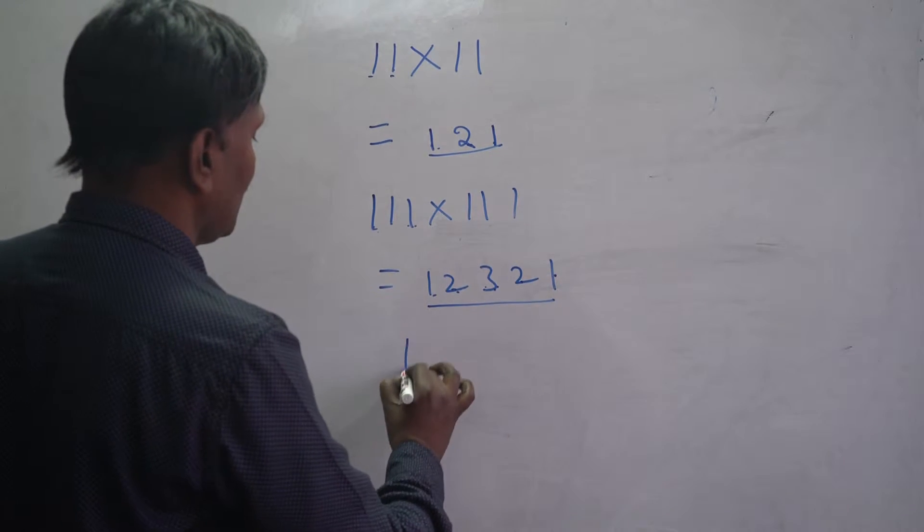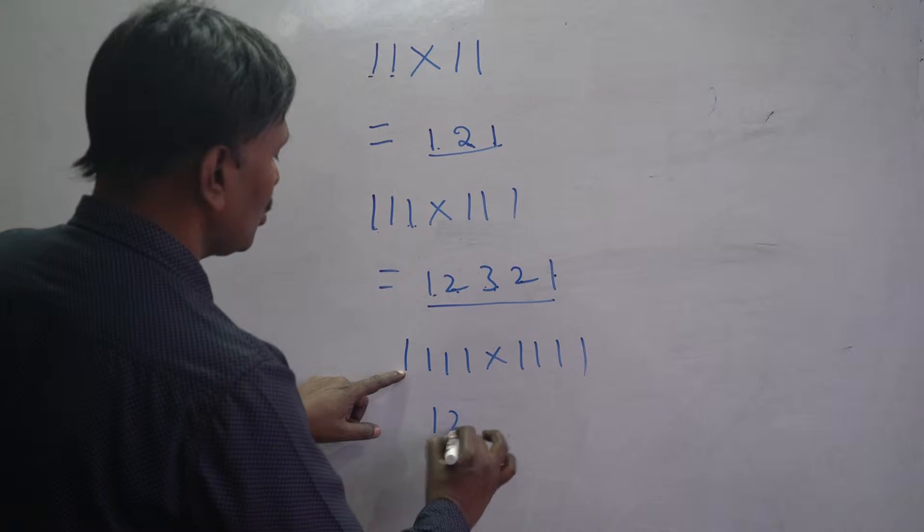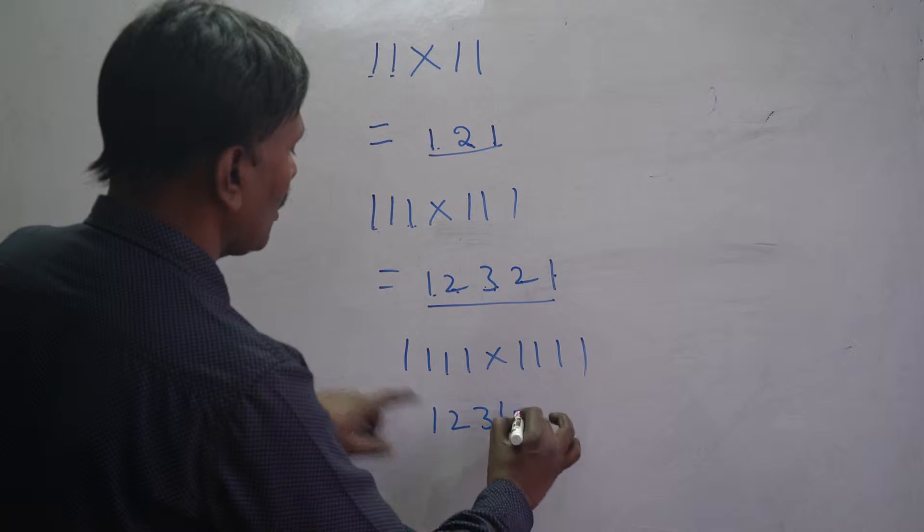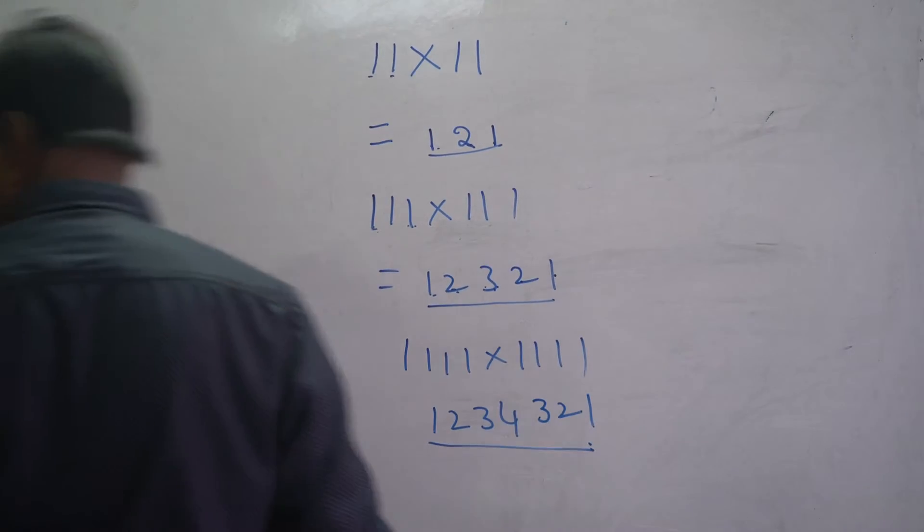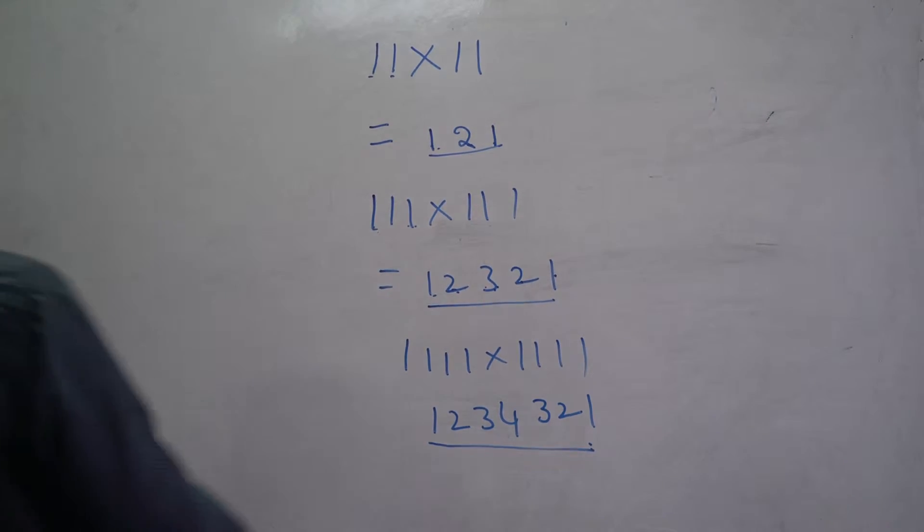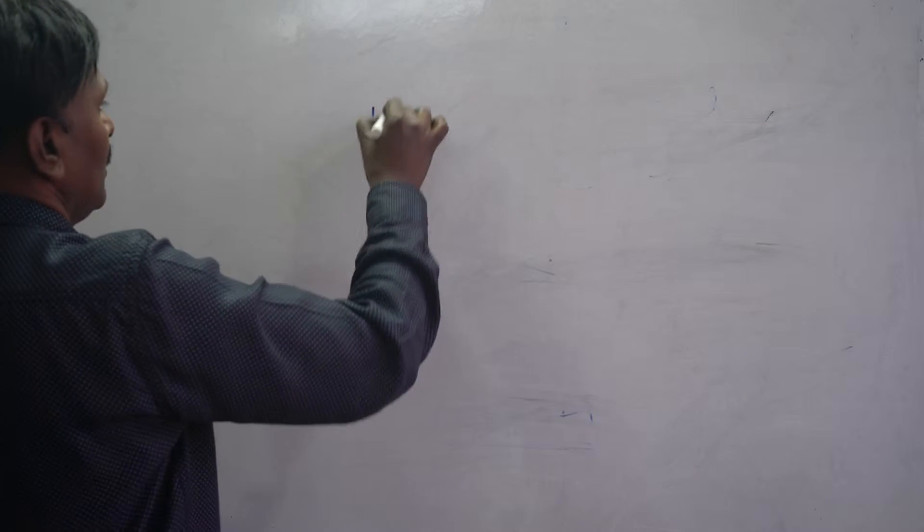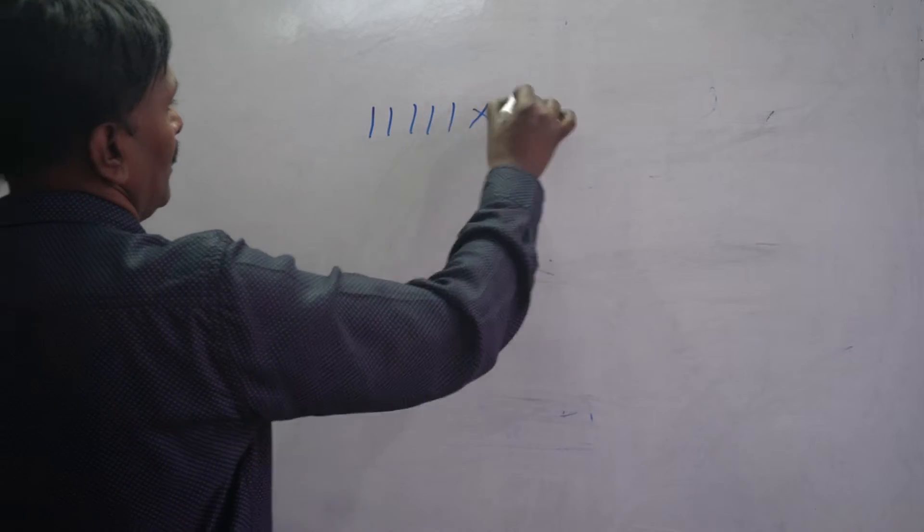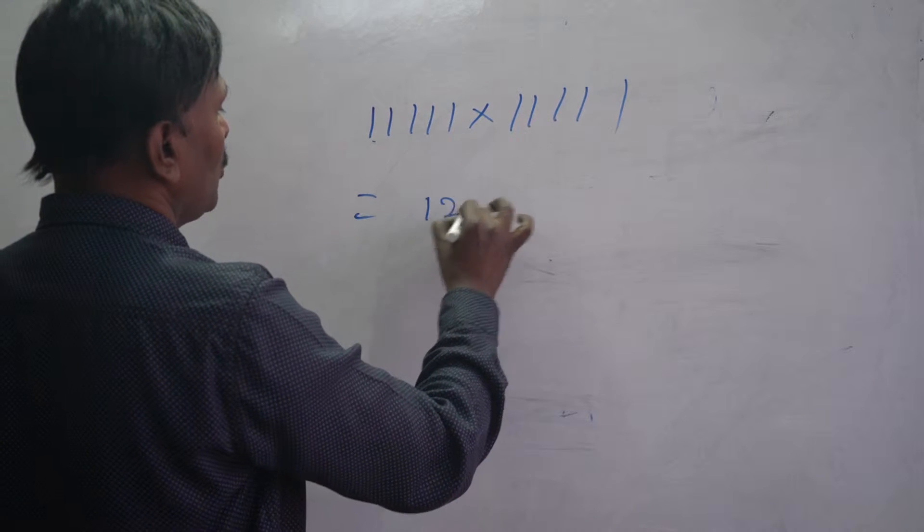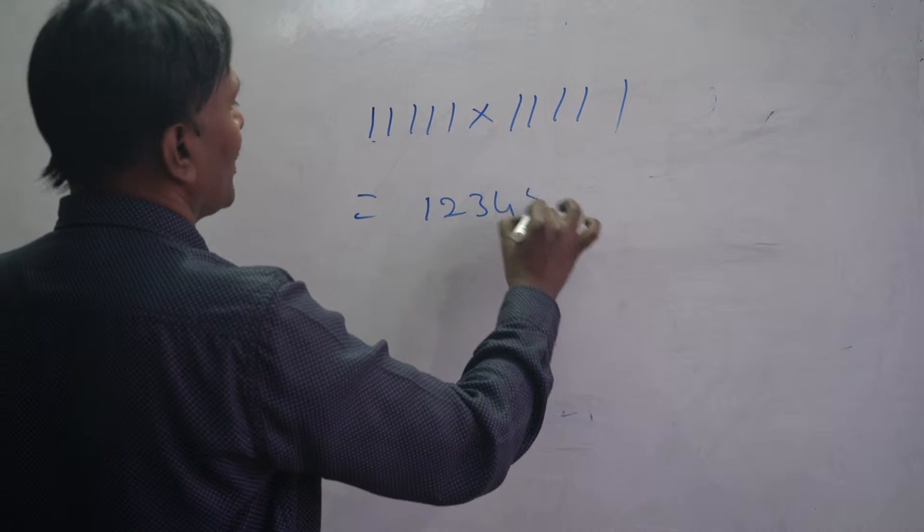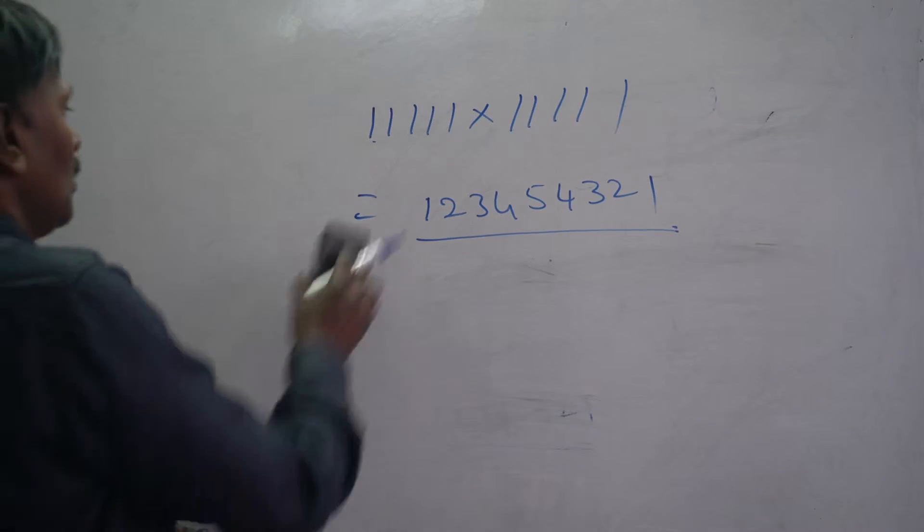Here, if it is four ones, what to do? 1, 2, 3, 4, next 3, 2, 1. This is the output. If it is five digits, five ones: 1, 2, 3, 4, 5, next 4, 3, 2, 1. This is the output.